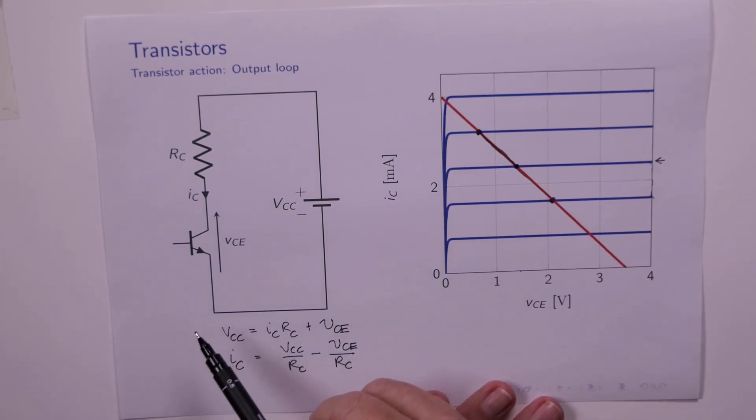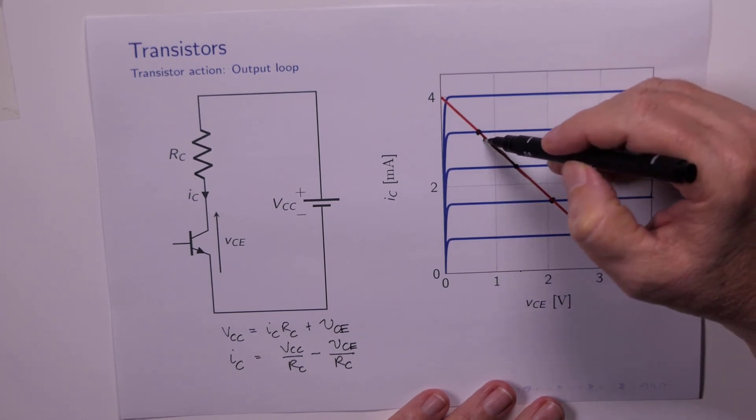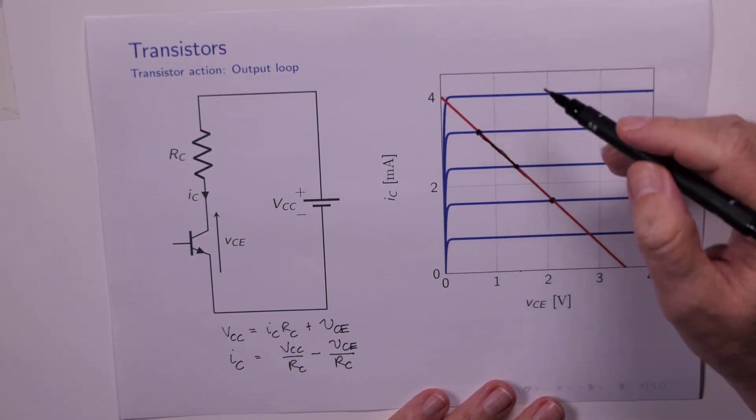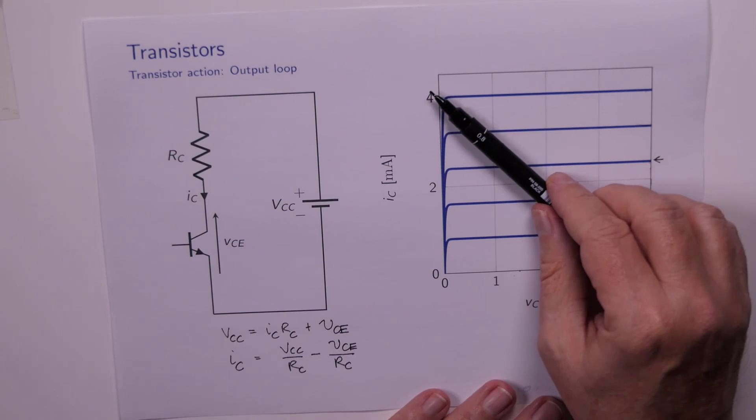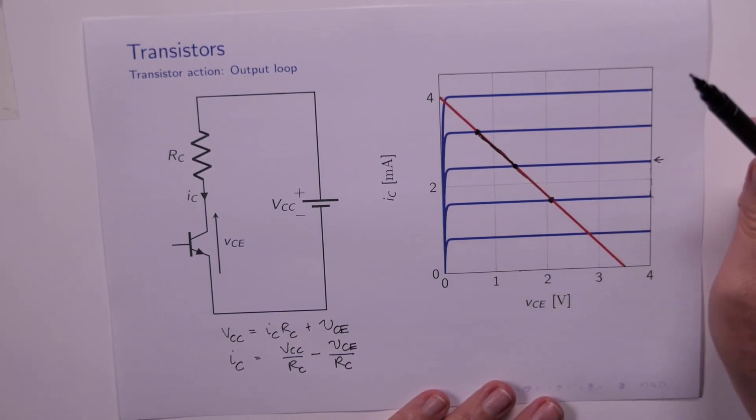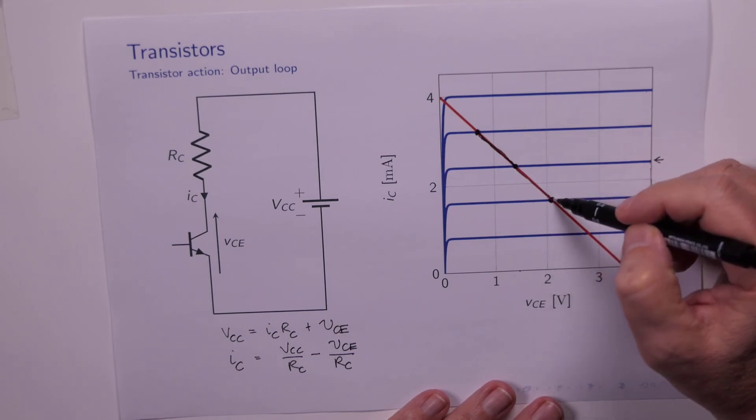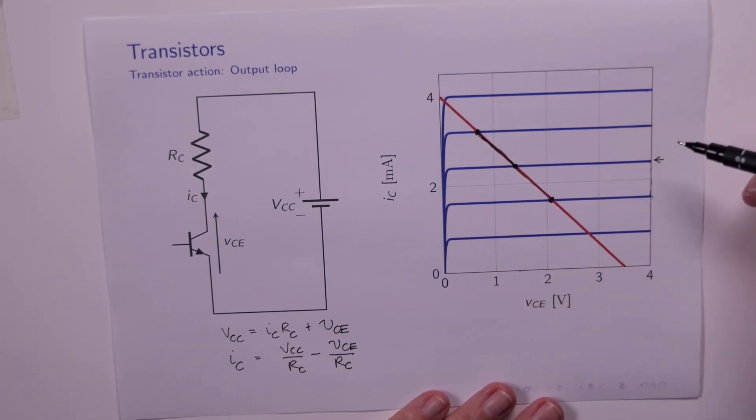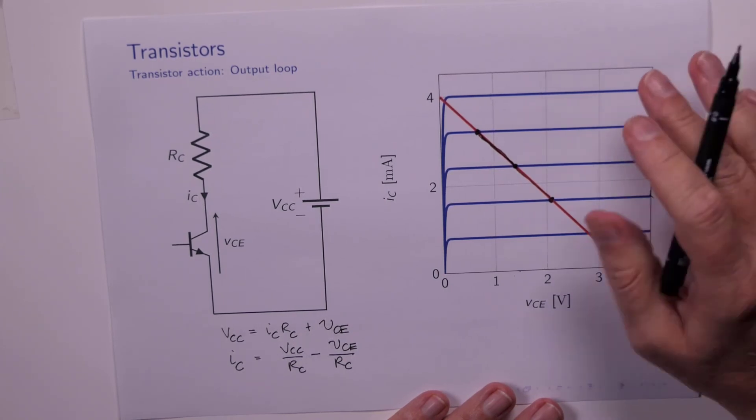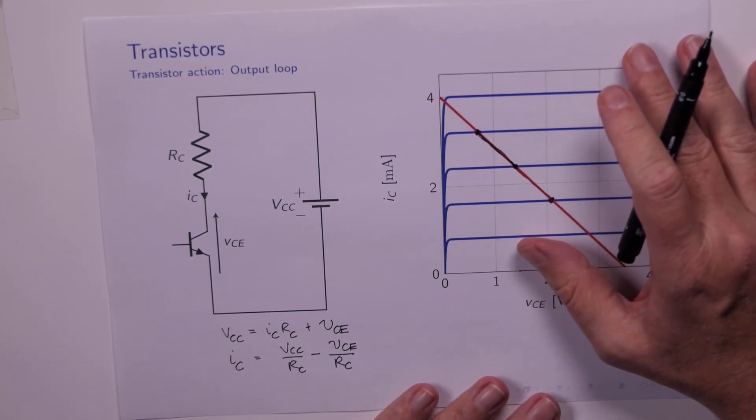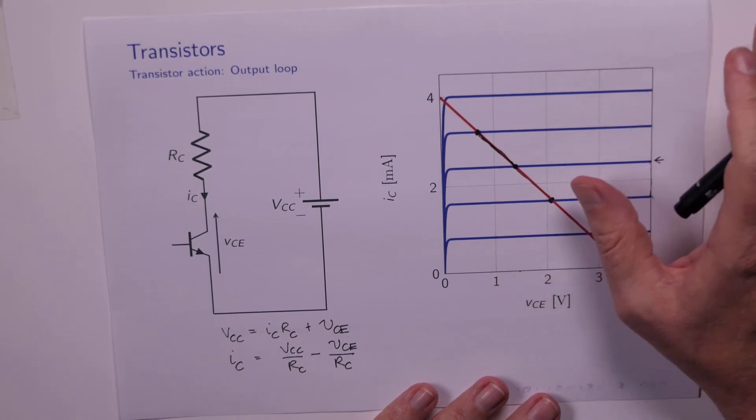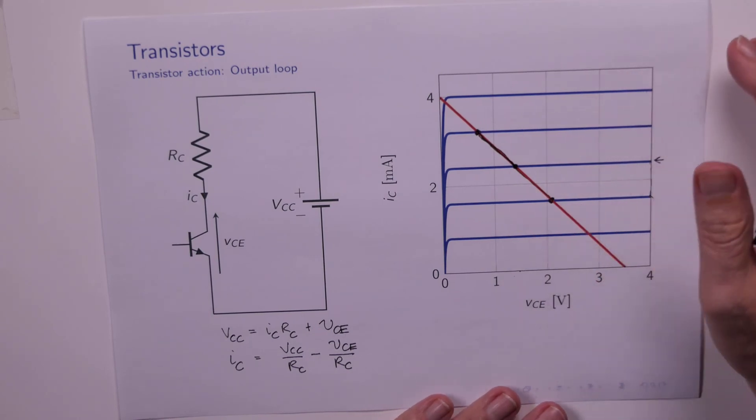And you can see that as IB increases, IC increases because we're moving up here. But as IC increases, do you see that VCE decreases? Because this load line has a negative slope. And as IC decreases, VCE increases. So that's something to bear in mind, and that will become significant later on. So we call this the transistor action. This allows us to see how the voltage and currents in the circuit behave based on the input and output terminal characteristics.